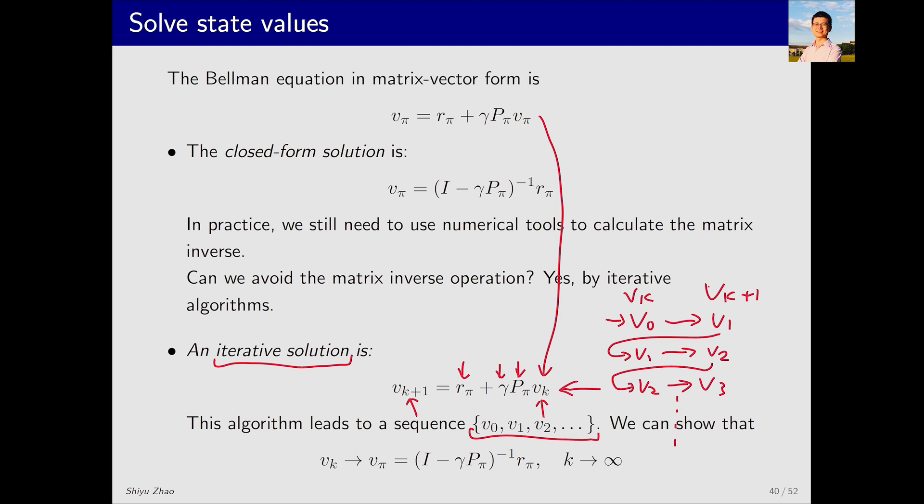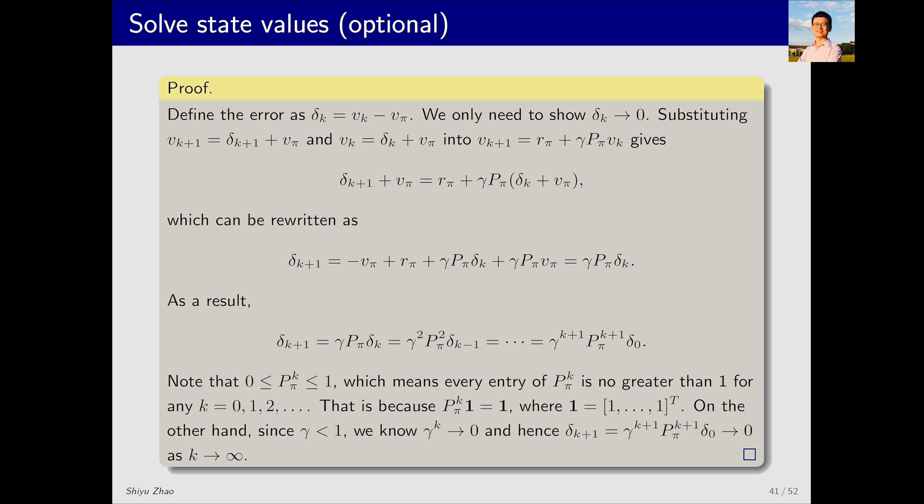In fact, it can be proven that as k approaches infinity, v_k converges to v_π, where v_π represents the true state value. Why does v_k converge to v_π? There is a proof for this. You can find it in my book. The basic idea involves defining the error or discrepancy Δ_k between v_k and v_π. Ultimately, it can be shown that Δ_k converges to 0.